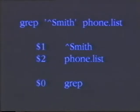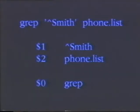In our grep command example, the pattern ^smith would be stored in $1. phone.list would be stored in $2, and grep would be stored in $0. If inside a command file I put $1, the shell will take the first argument off the command line and put it in place of where I've stored the $1 in the file. This is how I can take arguments off the command line and insert them into my search command for the phone list.